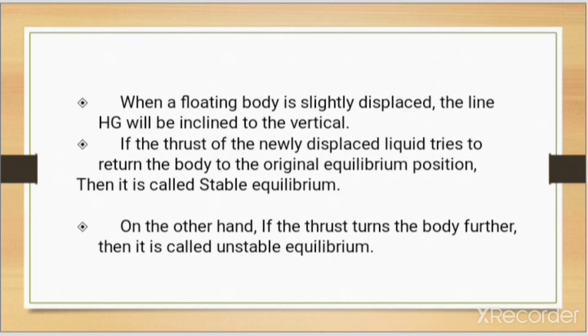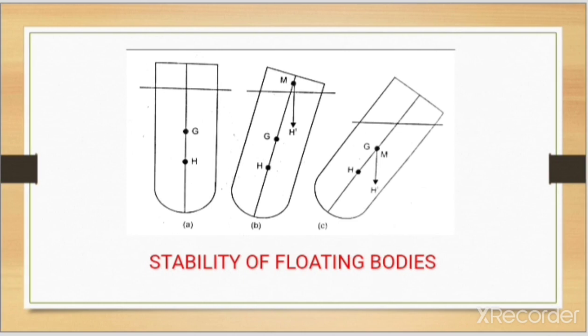When a floating body is slightly displaced, the line HG will be inclined to the vertical. If the thrust of the newly displaced liquid tries to return the body to the original equilibrium position, then it is called stable equilibrium. On the other hand, if the thrust turns the body further, then it is called unstable equilibrium.